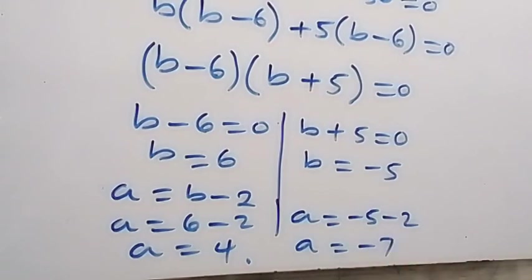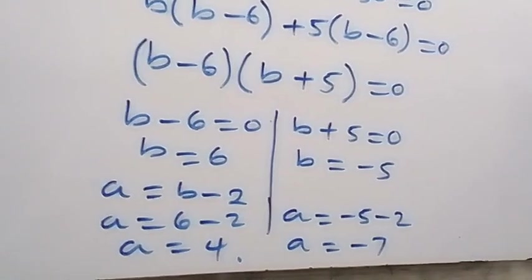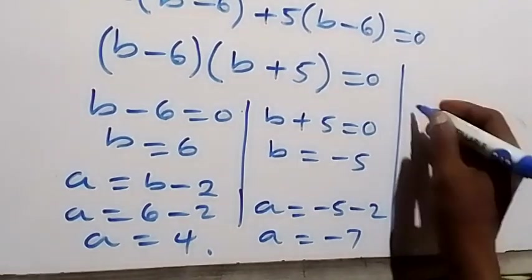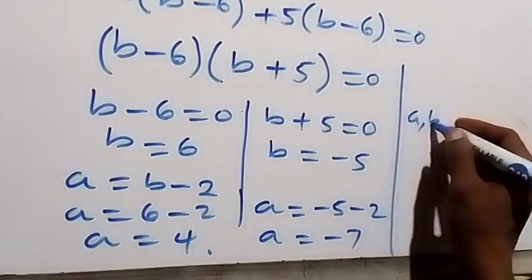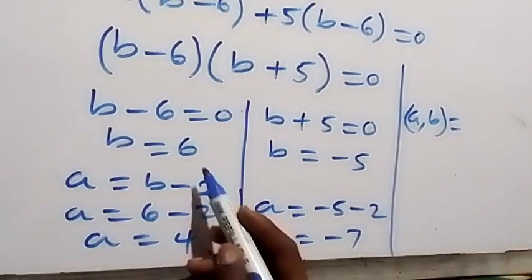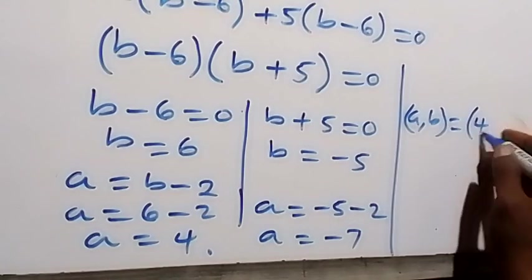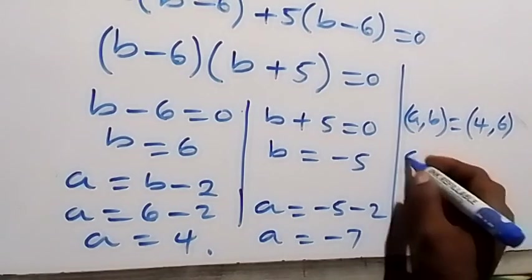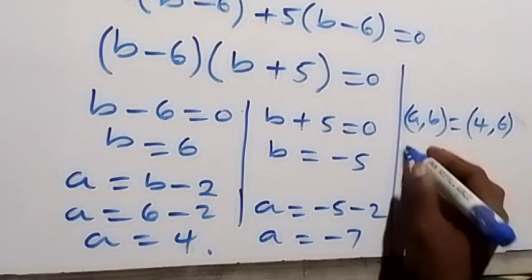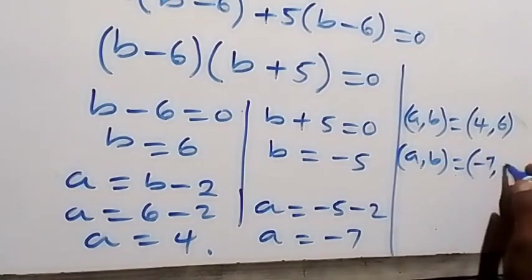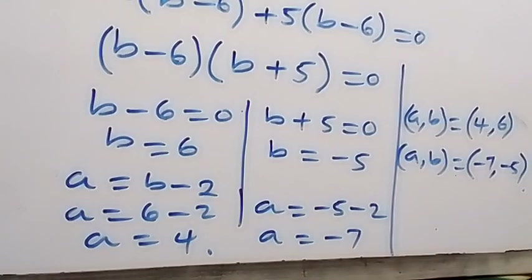Then, we have the set of solutions. From here, we write the solutions out in form of A comma B. So, A, B, the first set gives us A is 4 and B is 6. So, we have 4 comma 6. And also, we have A, B also equals to A is minus 7 and B is minus 5. And here, we have these two set of solutions to this problem.